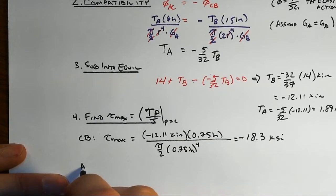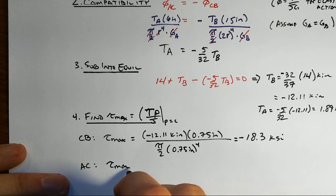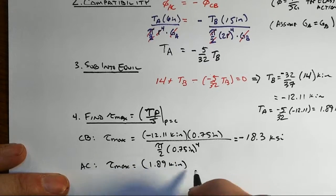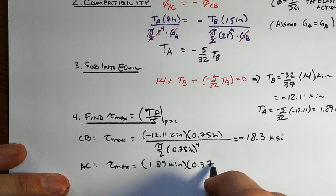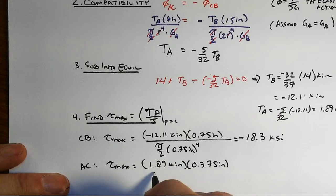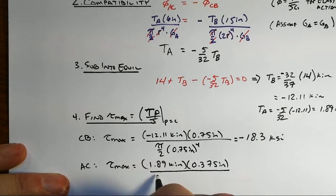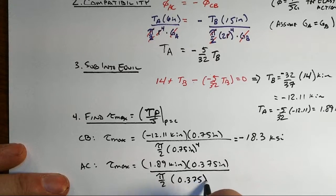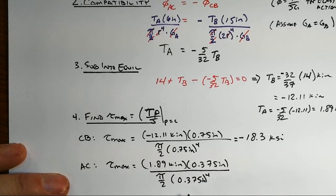In AC, then tau max will equal 1.89 kip inches times a radial distance of 0.375 inches, and then over pi over 2 in 0.375 inches raised to the 4th.